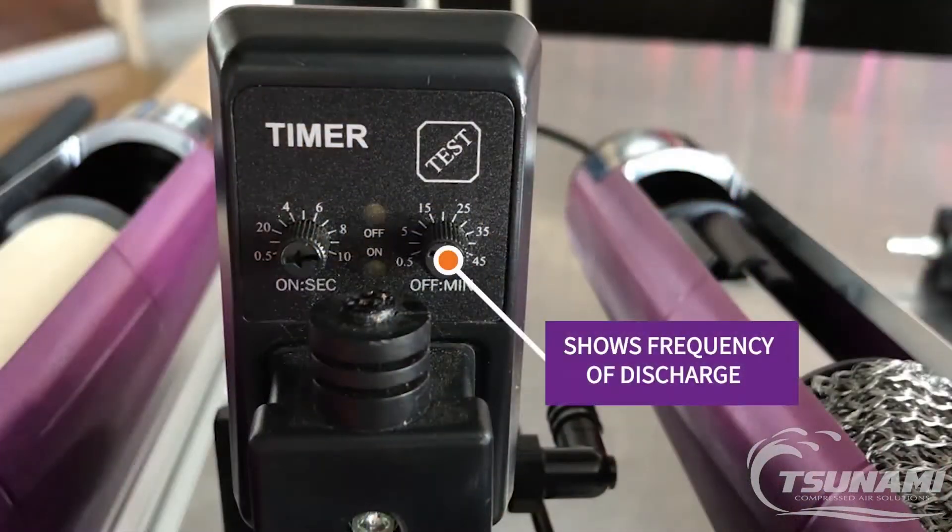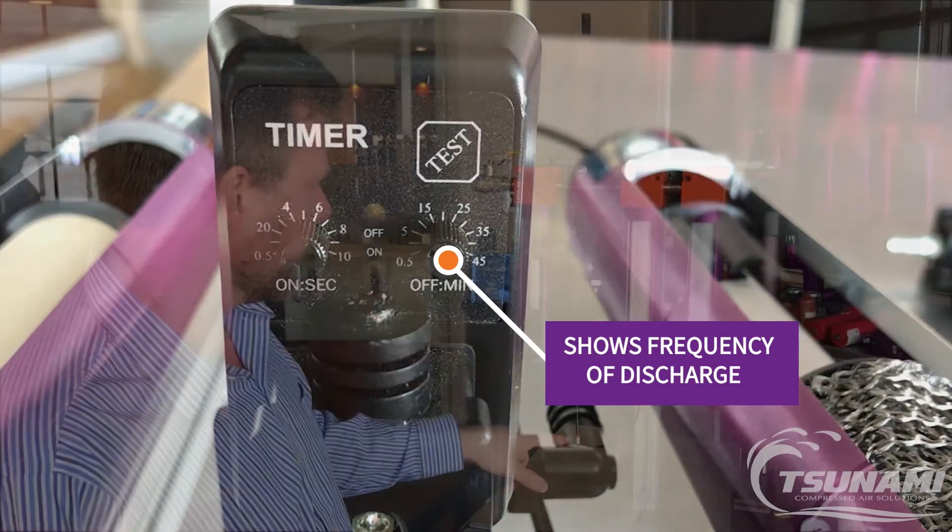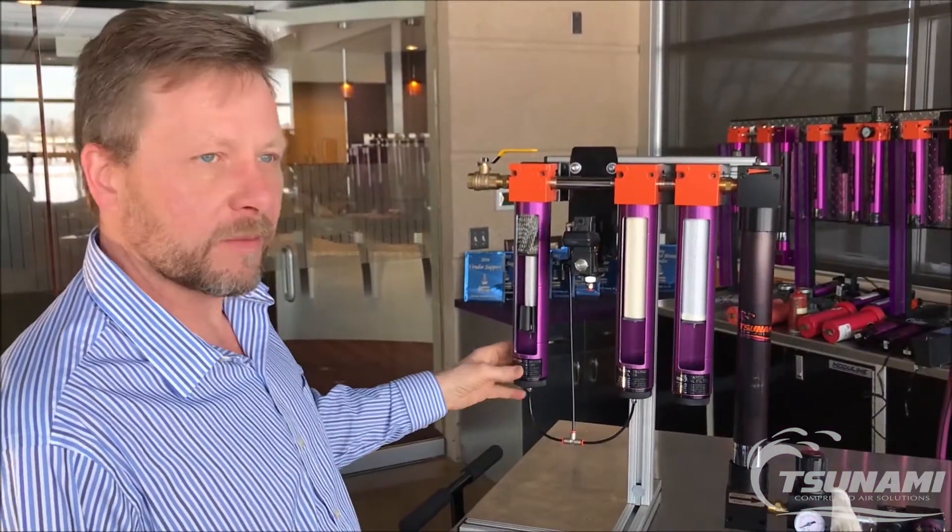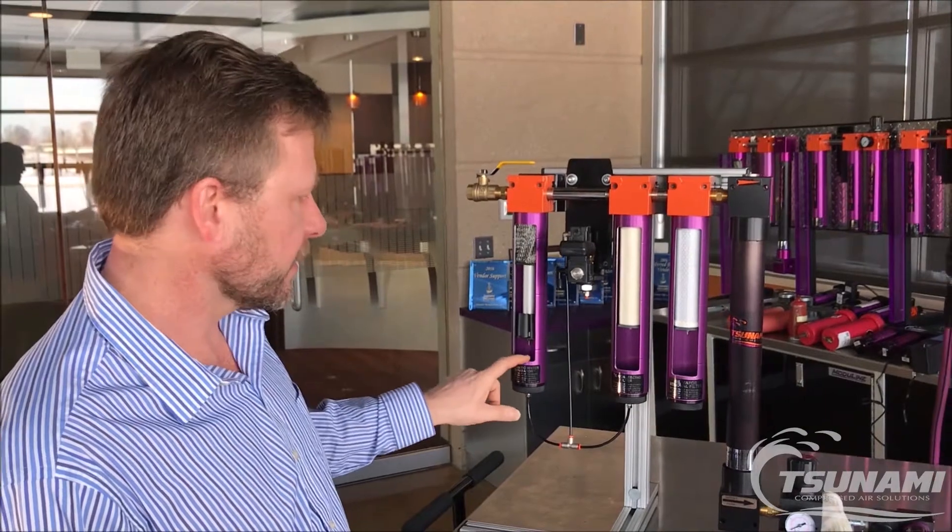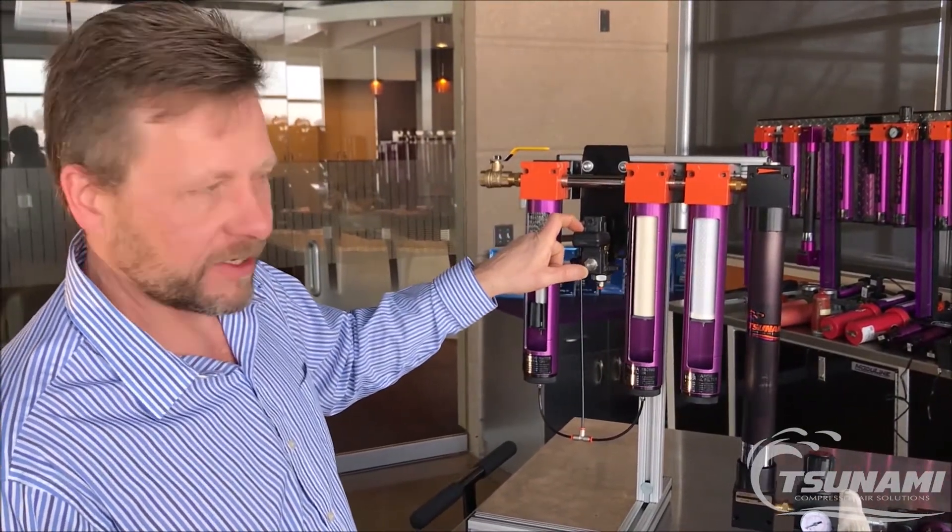We use the off time to set the frequency of how often we want it to discharge and make sure we're removing the bulk liquids. For extreme heavy-duty situations where your air system has a lot of water and oil, you may want to set that off time between 5 and 10 minutes.